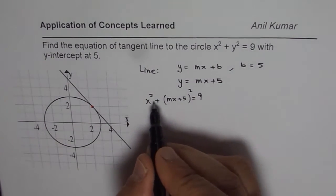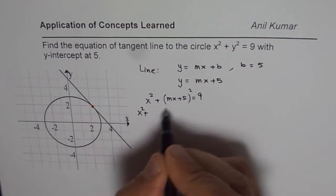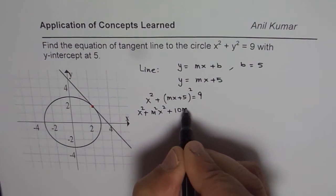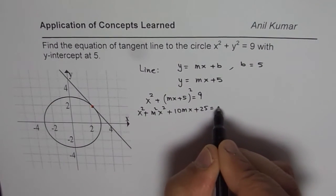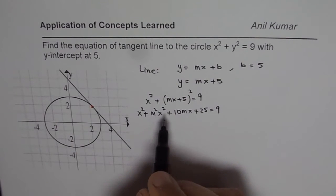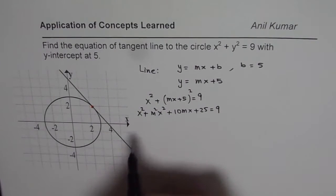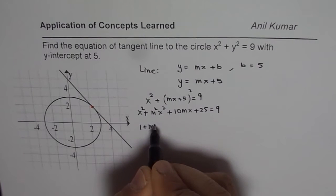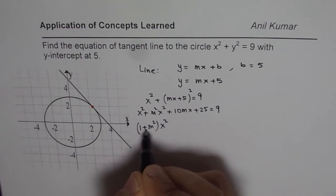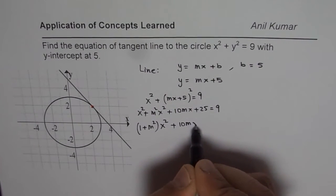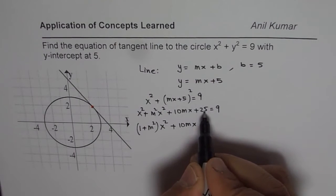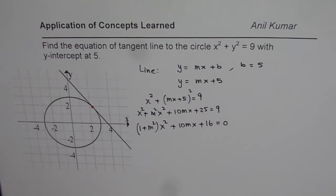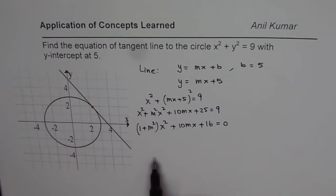Now, we need to expand and simplify. So, let us expand. We have x square plus, this is m square x square plus 2ab, that means 10mx plus 5 square is 25, equals to 9. So, as far as the x square is concerned, we can actually write 1 plus m square as a common factor for x square coefficient, plus we have 10mx. And we can take away 9 from 25, so we have plus 16 equals to 0. So, this is the equation which you get.